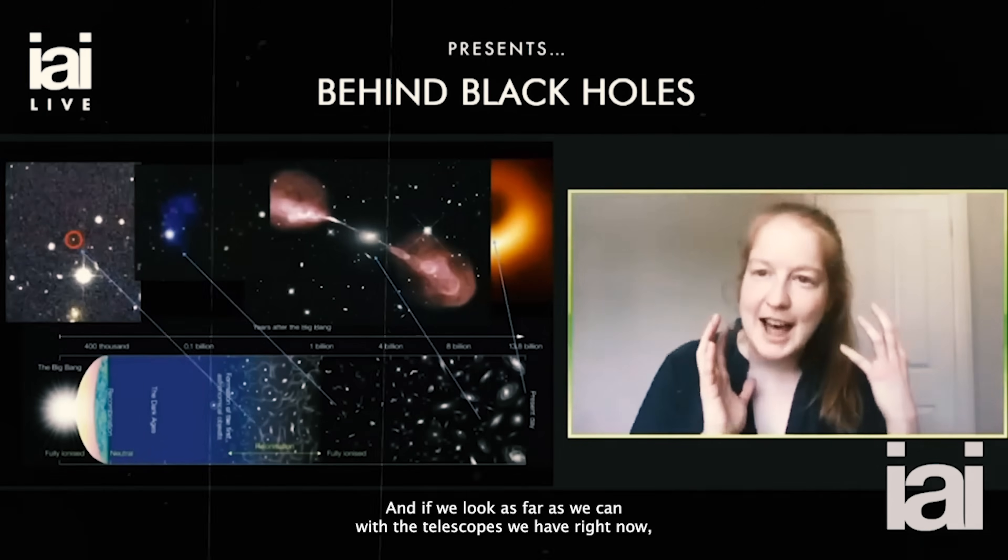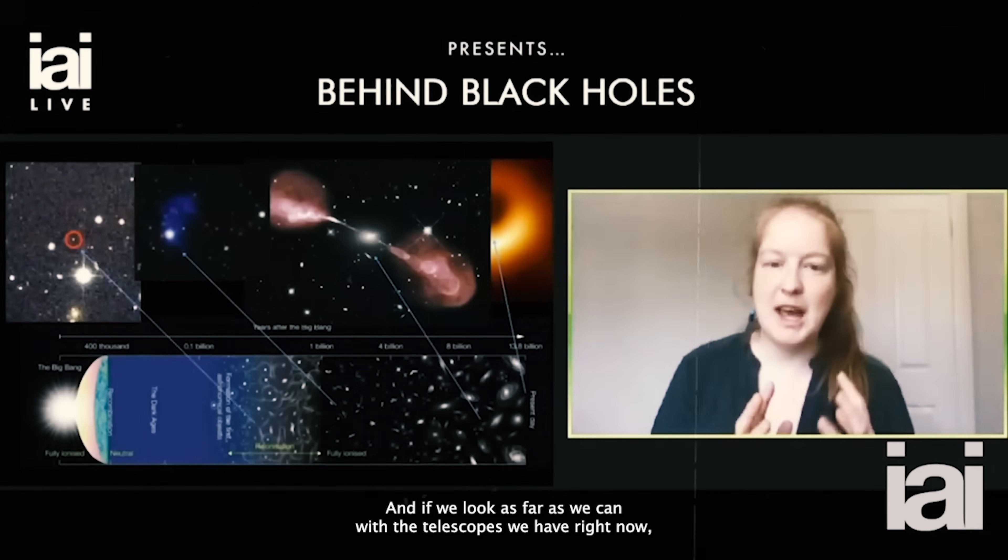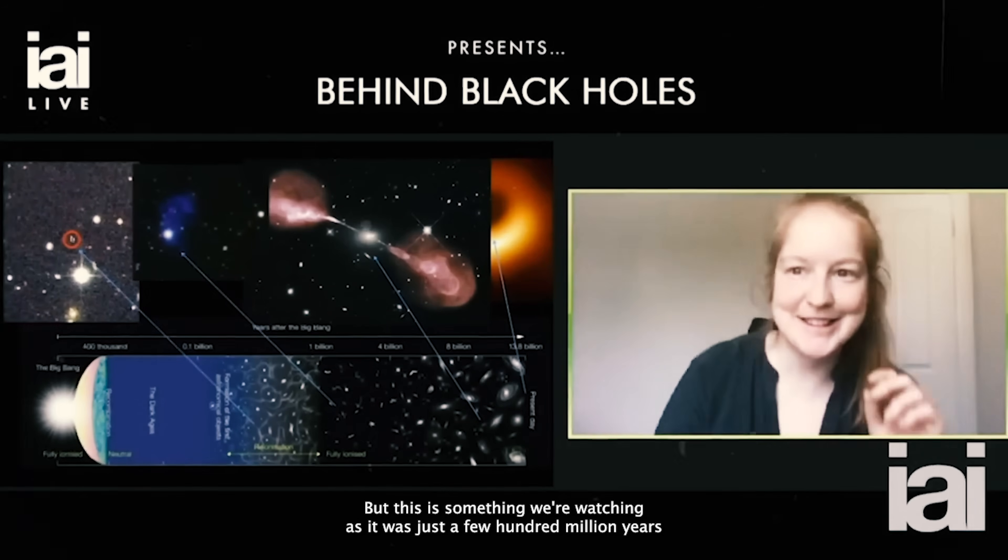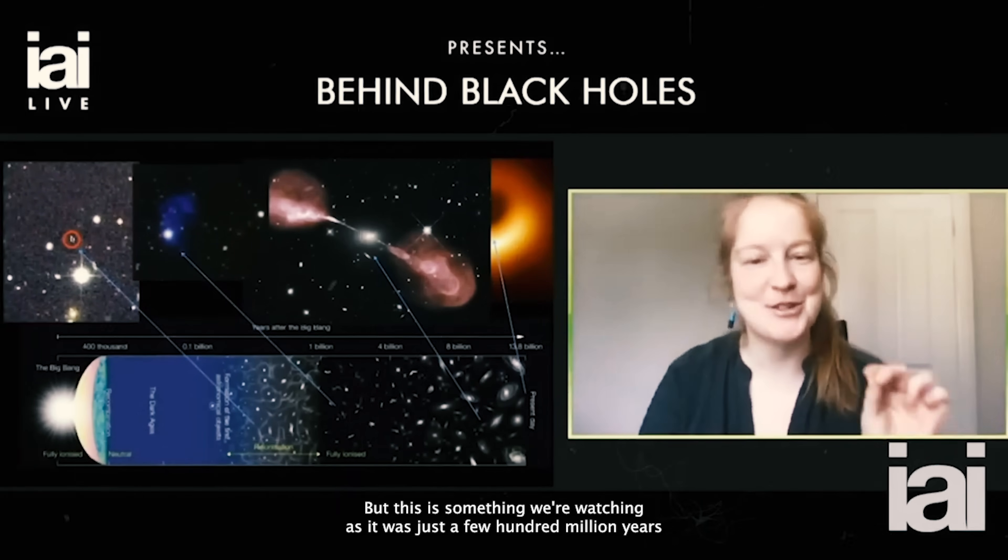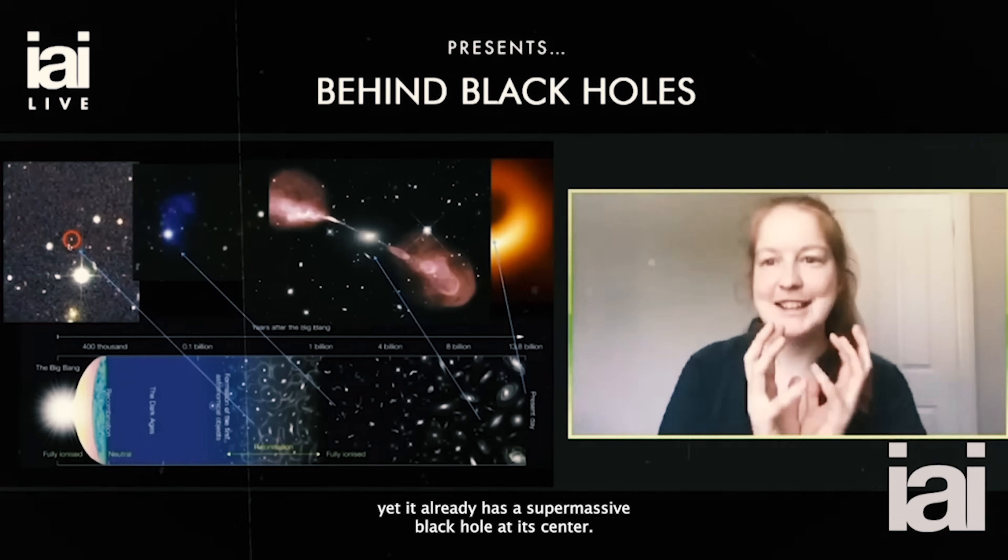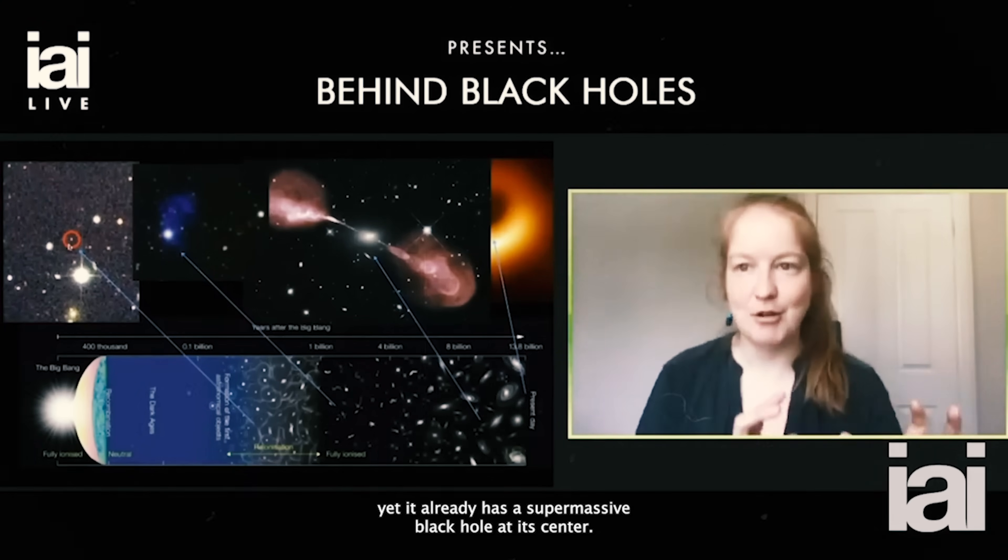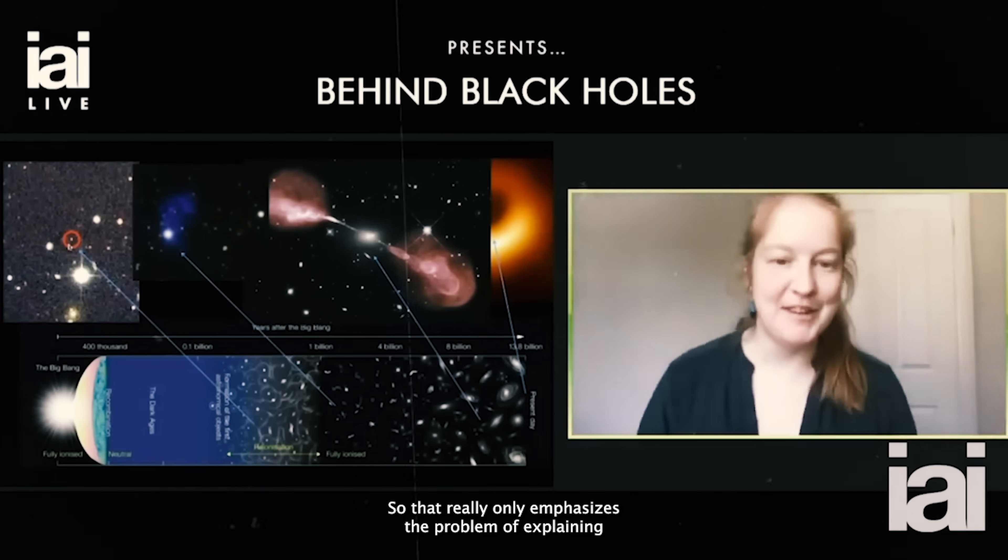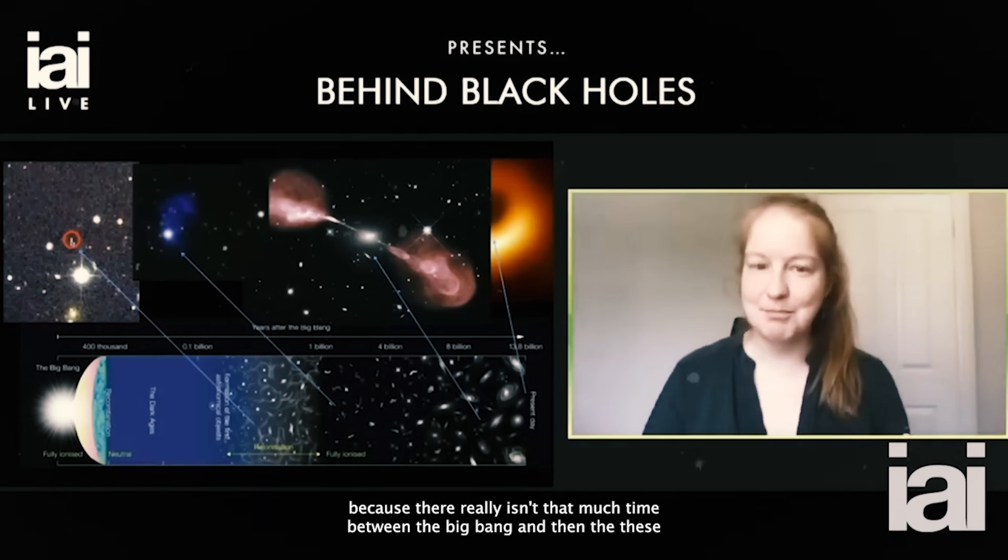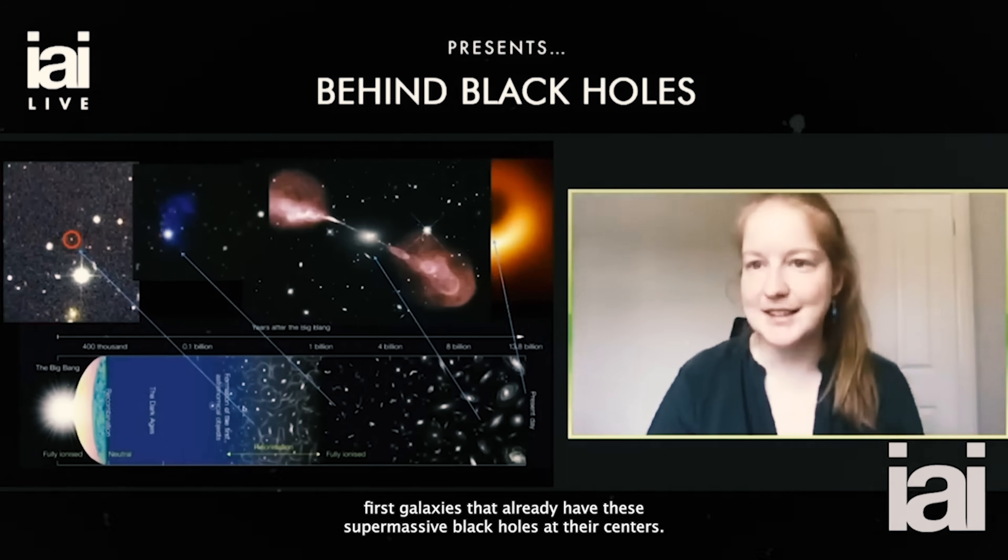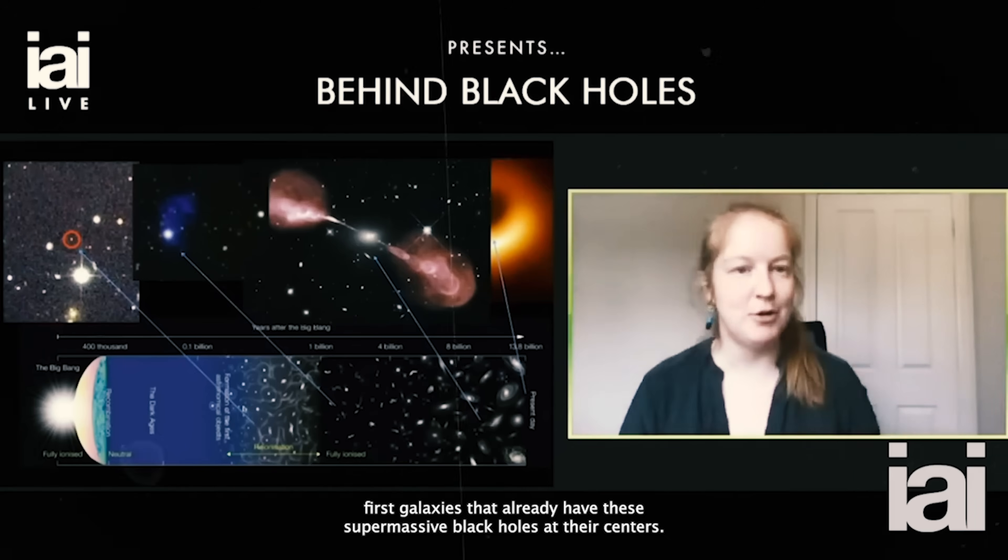And if we look as far as we can with the telescopes we have right now, up to only a few hundred million years after the Big Bang, we see one of the first ever galaxies to form, yet it already has a supermassive black hole at its center. That really emphasizes the problem of explaining how we form these things, because there isn't much time between the Big Bang and these first galaxies that already have supermassive black holes at their centers.